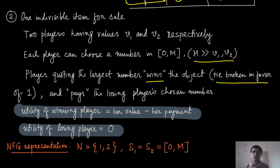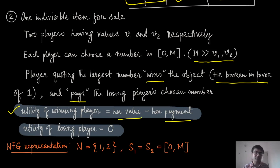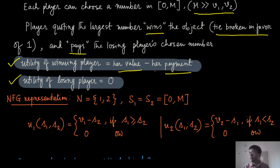The player who quotes the largest number wins the object. Ties are broken in favor of Player 1. The winner pays the losing player's chosen number — so if a1 ≥ a2, Player 1 wins and pays the amount a2 to the owner. The utility of the winning player is their value minus the payment made, and the utility of the losing player is 0.